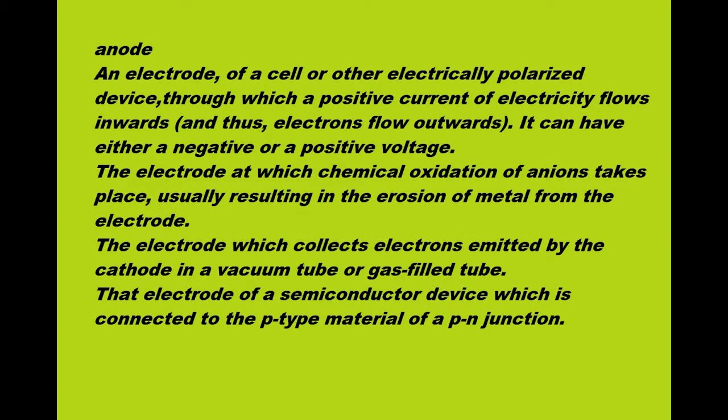Anode: an electrode of a cell or other electrically polarized device, through which a positive current of electricity flows inwards, and thus electrons flow outwards. It can have either a negative or a positive voltage.